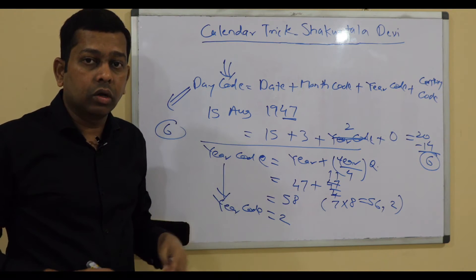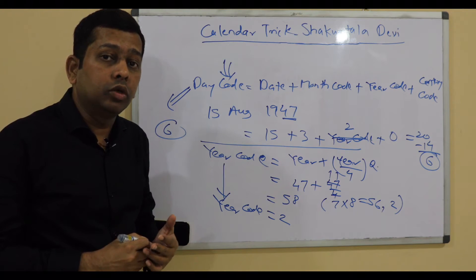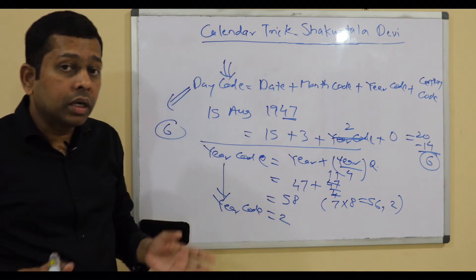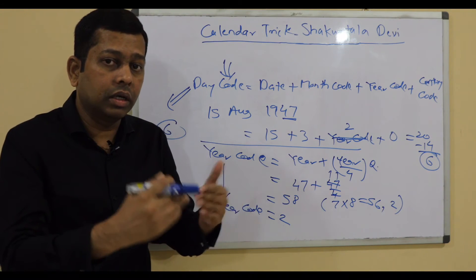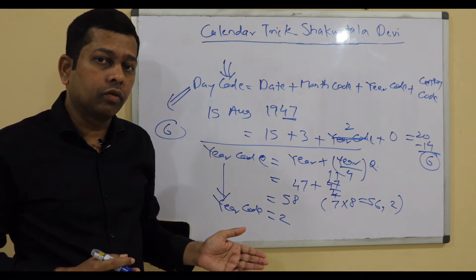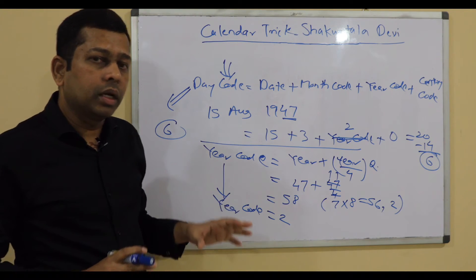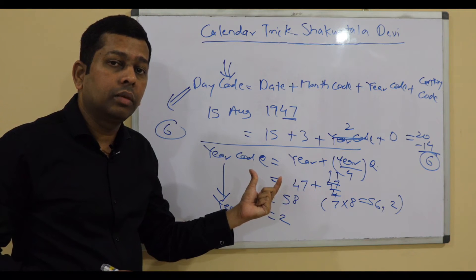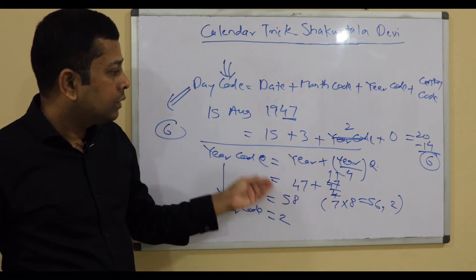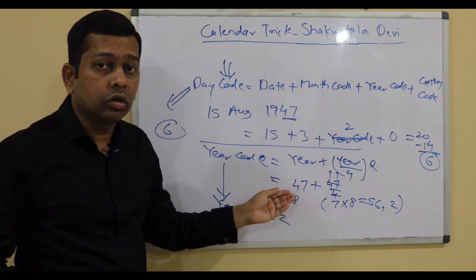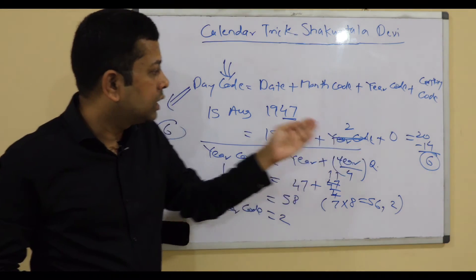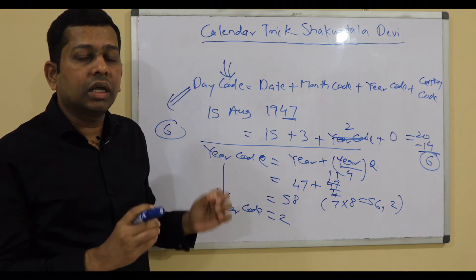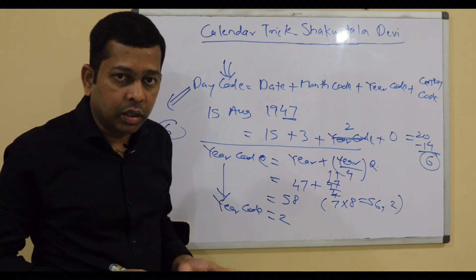This is how the trick works. Shakuntala Devi used to do these calculations — year plus year divided by 4 — or she would remember the day codes for every year, as she suggested in one of her books, making it more of a memory game. But here you can use the math. This is the part that needs patience, but with practice it becomes a simple addition of a few numbers, and you can tell the day for any date.